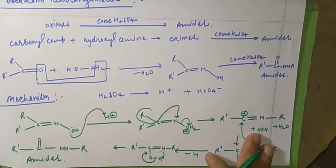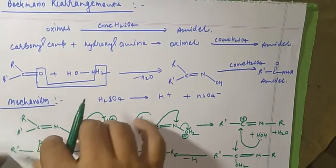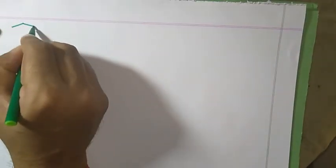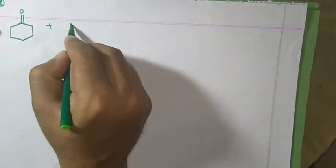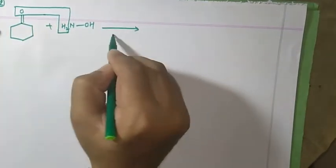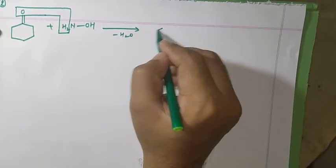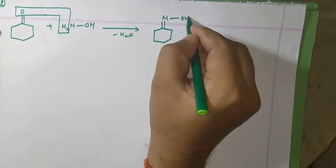Now let's see the next example to make things quite clear. Suppose I have a cyclic ketone — this is example number two. The cyclic ketone reacts with hydroxylamine. After losing H2O, the oxime forms: a ring with a double bond to N and an OH group attached.